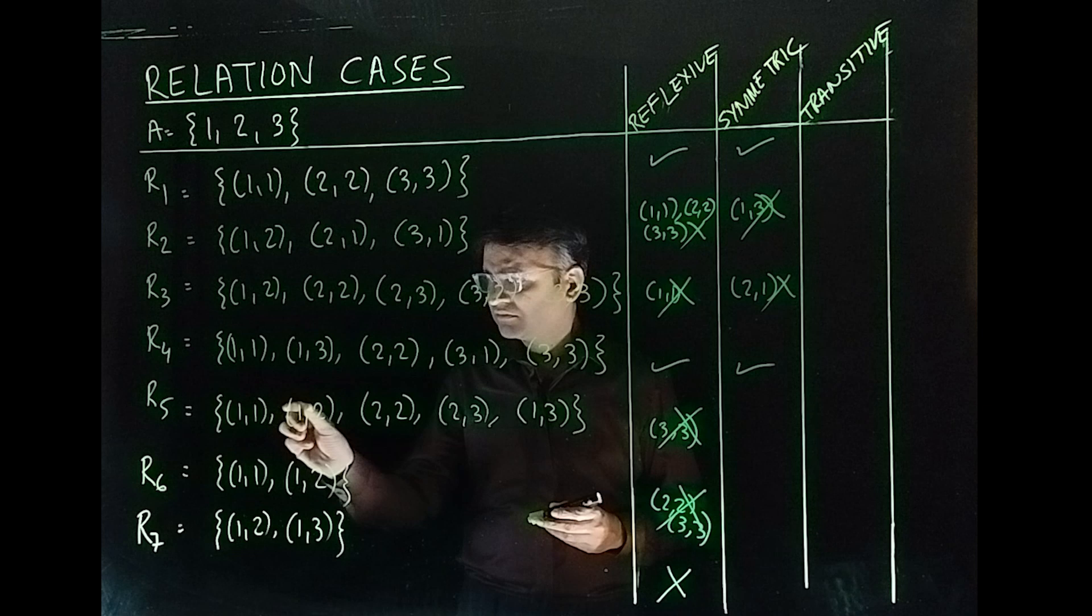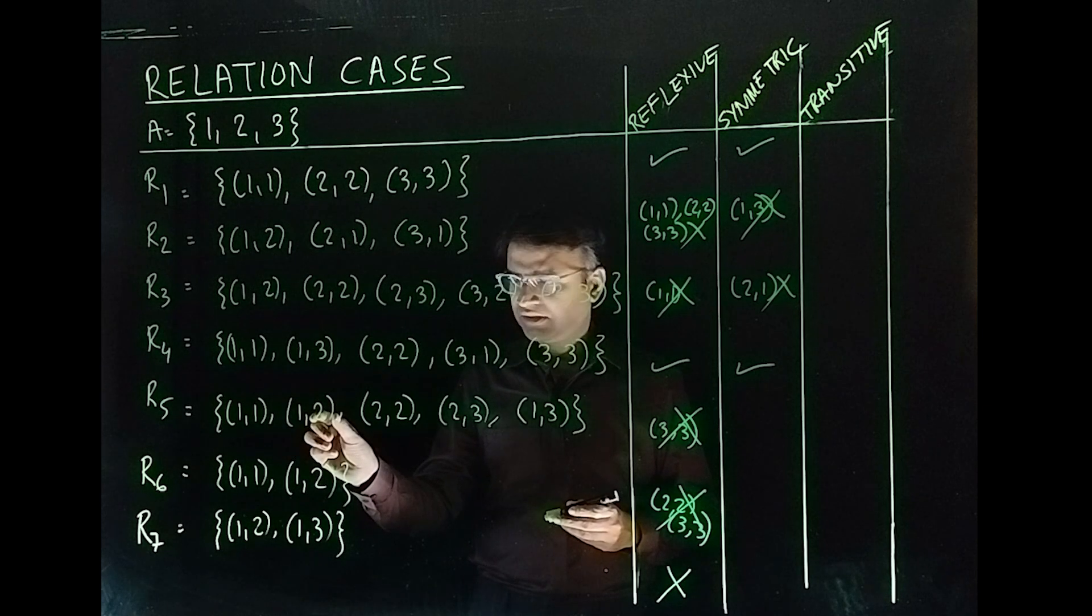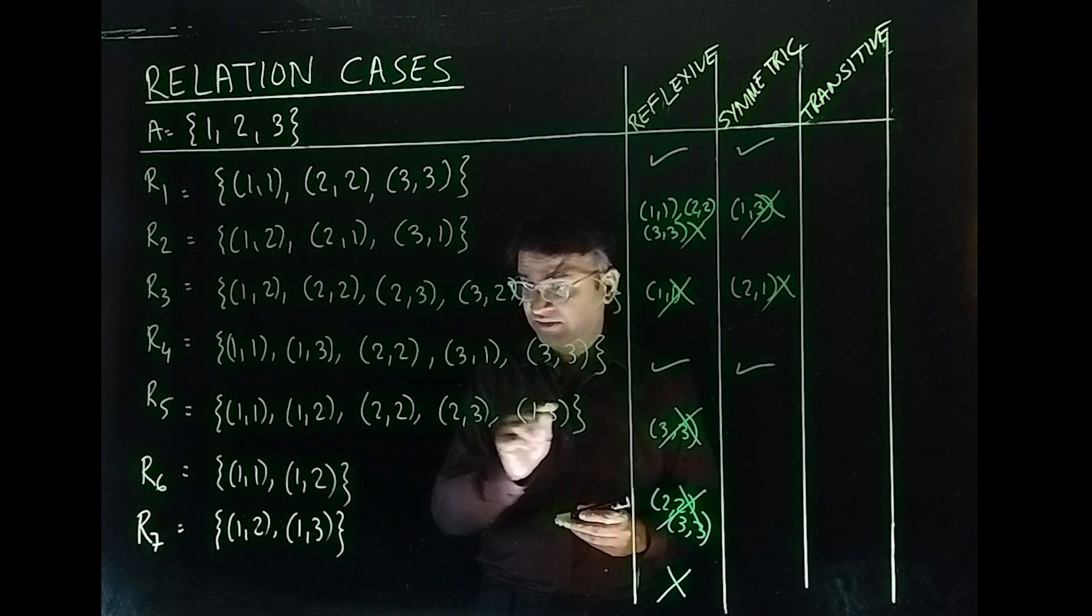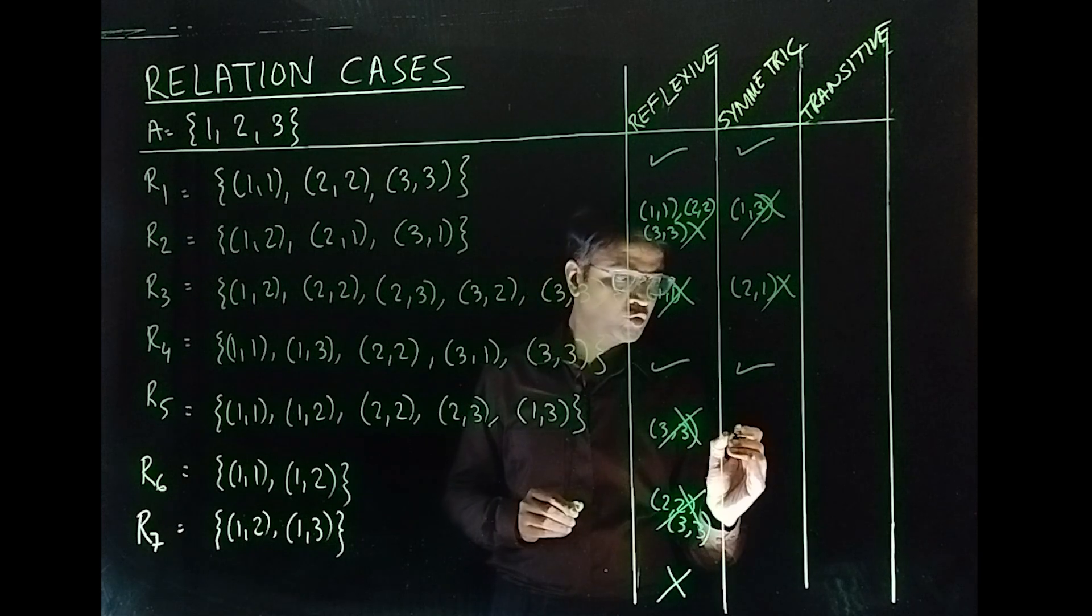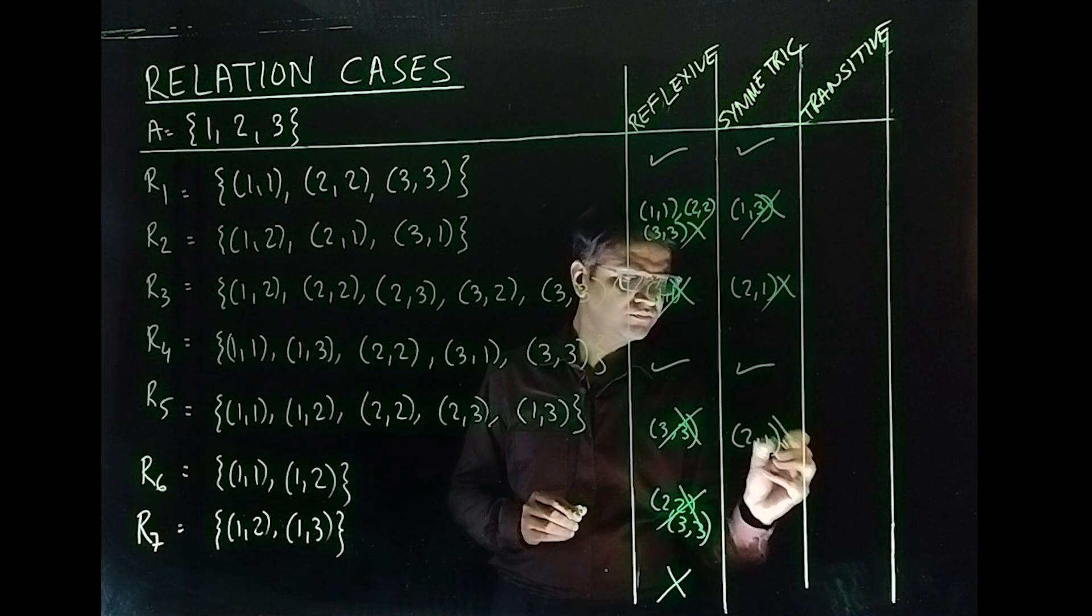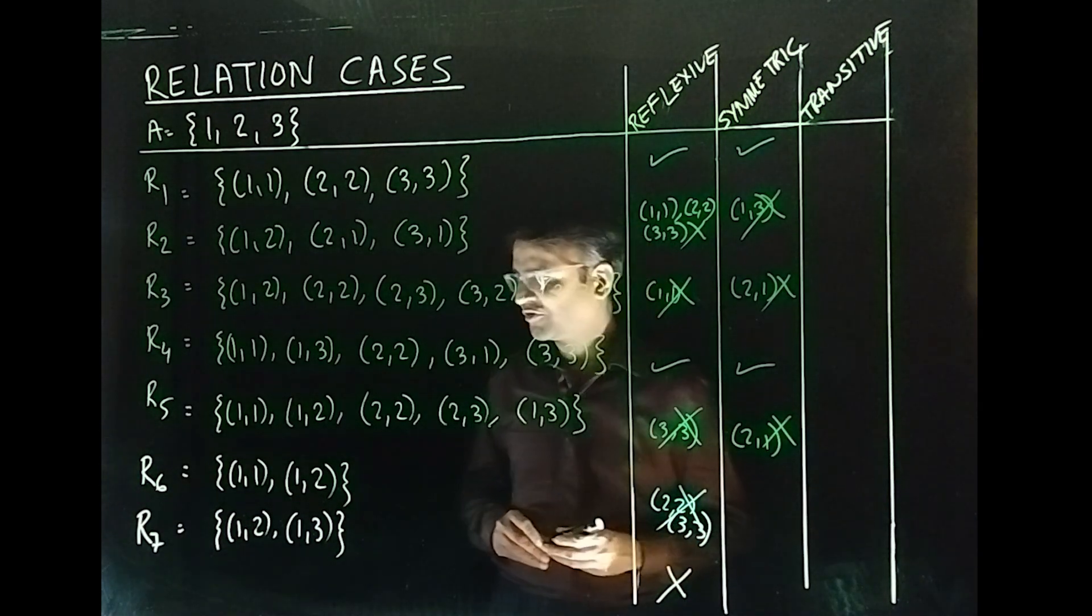You have (1,1), (1,2). Yeah, but you don't have (2,1) here. The reflection of (1,2). So, (2,1) is missing. Here also. So, no. It is not symmetric.